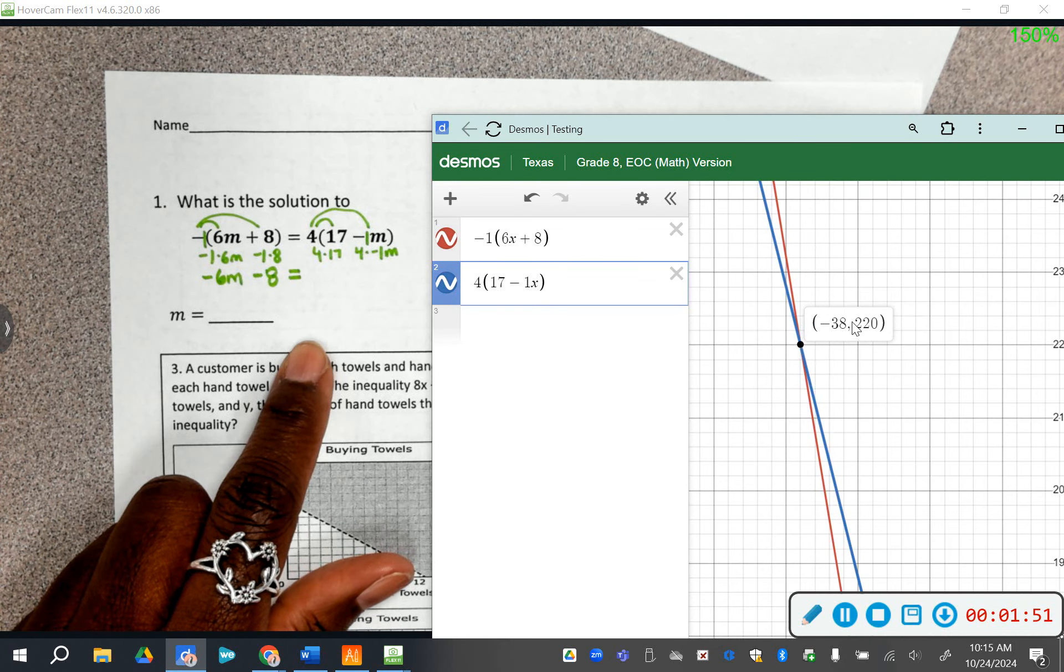If for some reason you end up getting a decimal answer, go ahead and change this to a decimal to see what that equals. Go ahead and change this to a decimal to see what that equals, so then you can match it with the decimal answer that Desmos gave you.